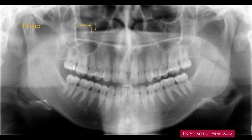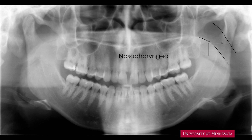Superimposed over the floor of the orbit are two radiopaque lines, almost parallel to each other — this is the infraorbital canal. On the posterior aspect of the border of the soft palate, there is a wide radiolucent band — this radiolucent band is the nasopharyngeal airway.